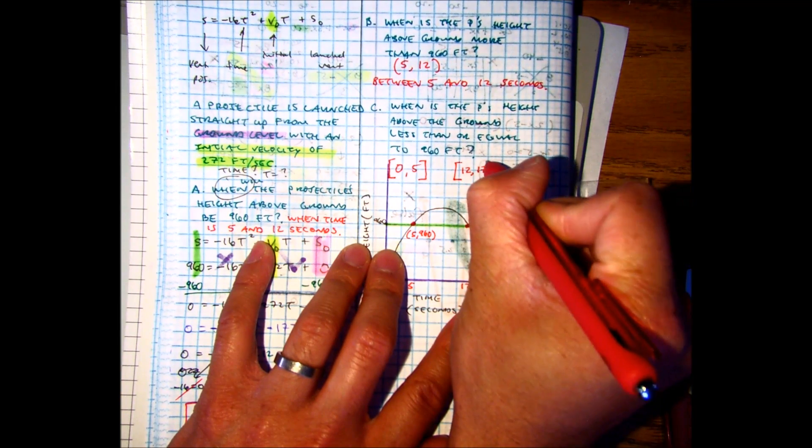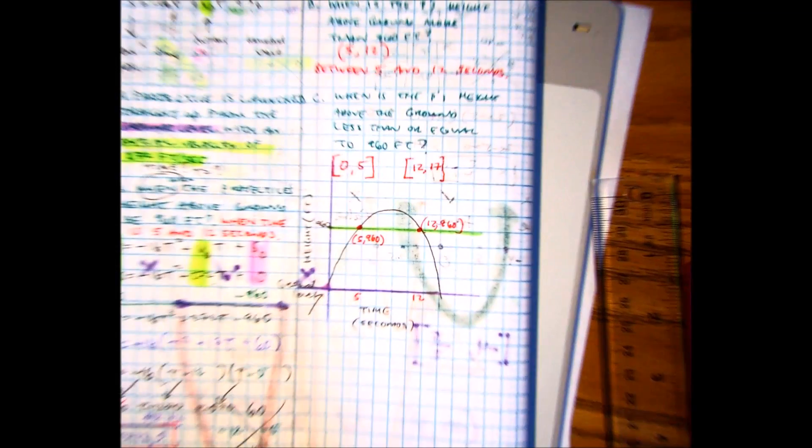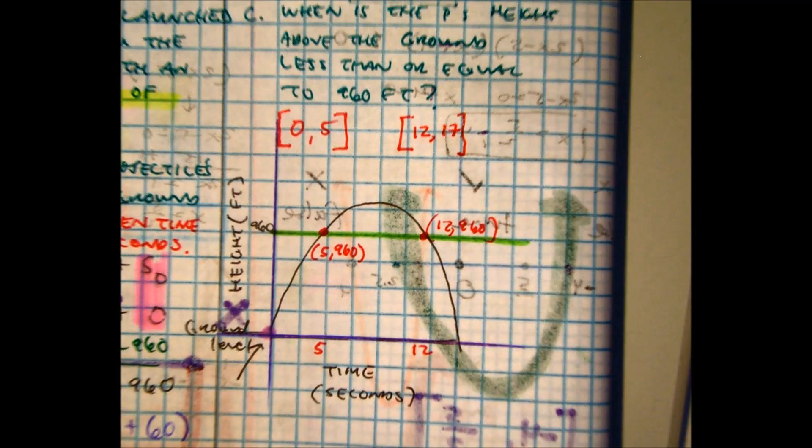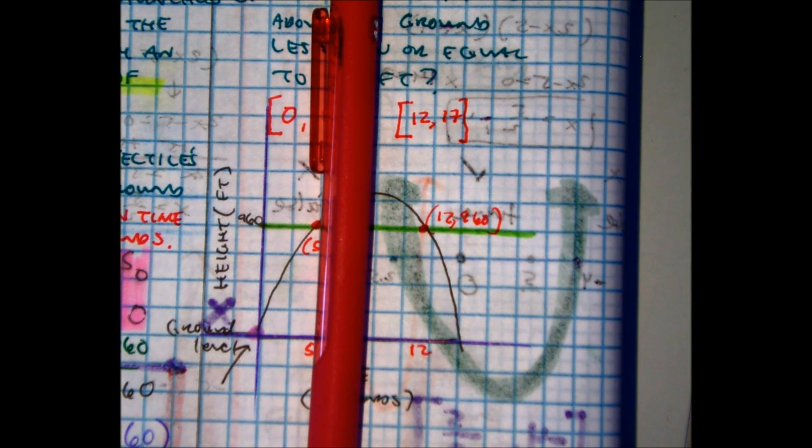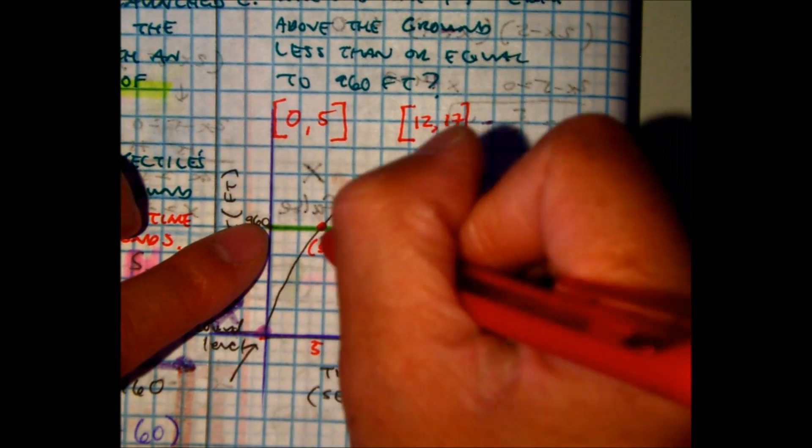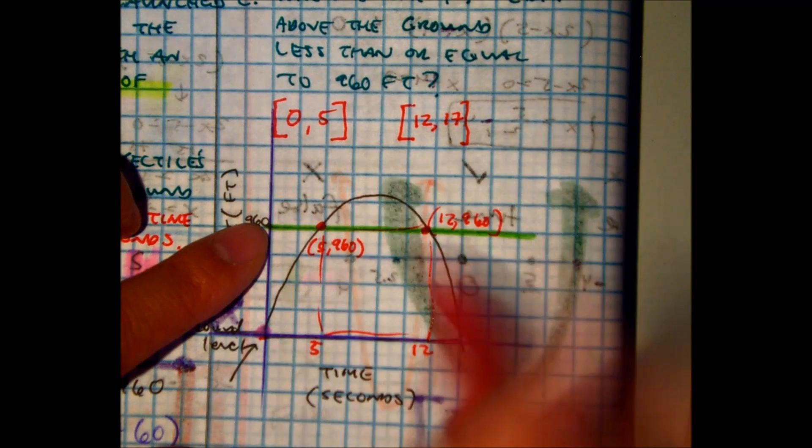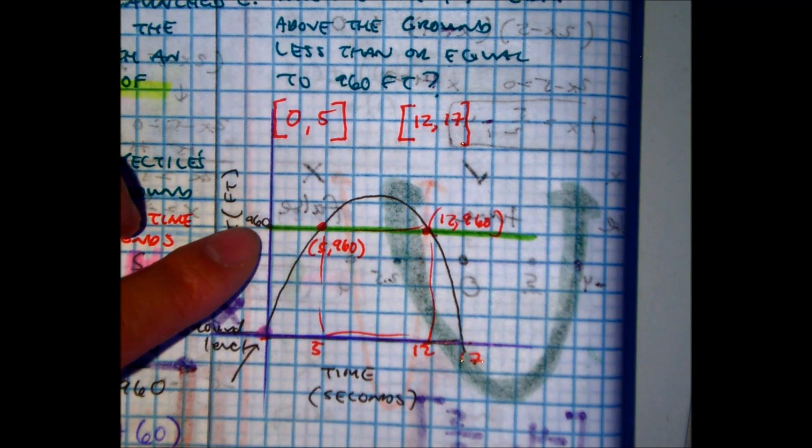Now you might ask, how did I get 17? Well, look at this and your property of quadratics. In this problem, we didn't figure out the maximum, but the maximum would have been your folding point. Parabolas are symmetrical. They can be folded in half. So what happens on one side happens on the other side. Does that make sense? So here, if the distance between here and here is how much? It's 5. Then the distance between here and here is also going to be 5. So you add 5 to 12, you get 17.